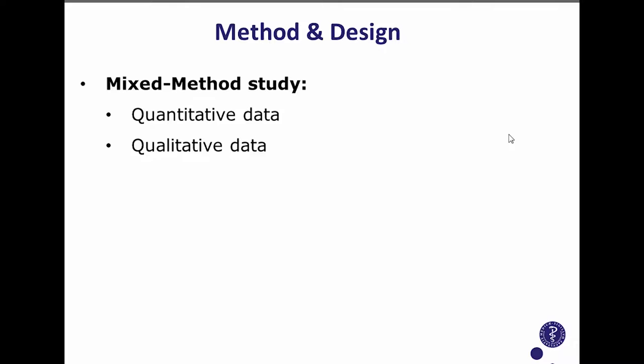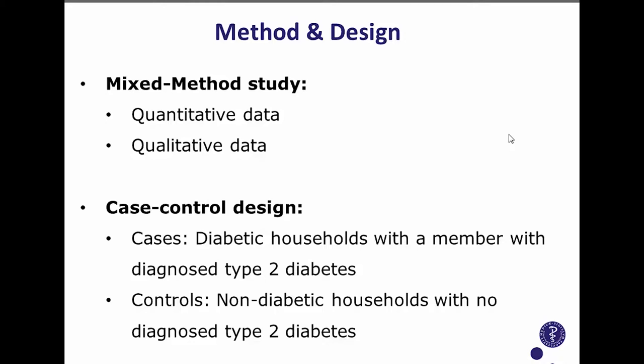I'll go quickly over the methodology. It was a mixed-method study collecting both quantitative and qualitative data. The design was a case-control design: cases were households with diabetes — 'diabetic households' — with one member diagnosed with type 2 diabetes; controls were households where no one had been diagnosed. Our study took place in Kasese District, located in eastern Africa bordering the Democratic Republic of Congo, in a mountainous area with approximately 750,000 inhabitants.